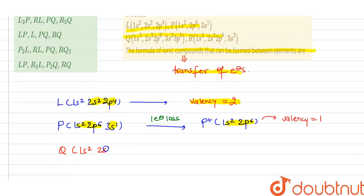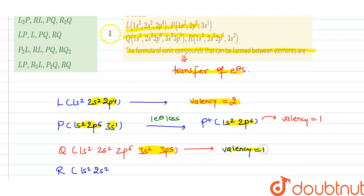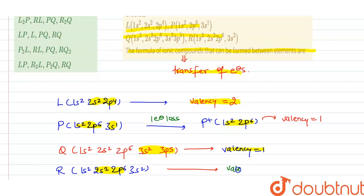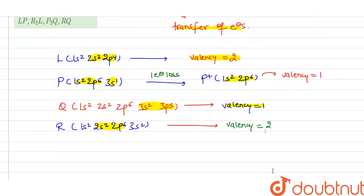The electronic configuration of Q is 1s2 2s2 2p6 3s2 3p5. In order to complete its octet, there is a need of one electron, so its valency will be equal to 1. For element R, the configuration is 1s2 2s2 2p6 3s2. If it releases two electrons, its configuration becomes 1s2 2s2 2p6, which is complete — so the valency of R will be equal to 2.